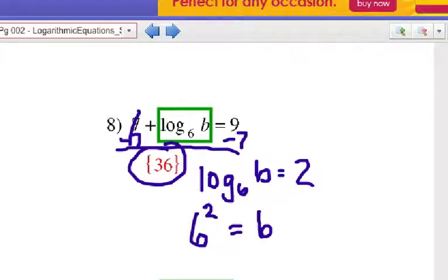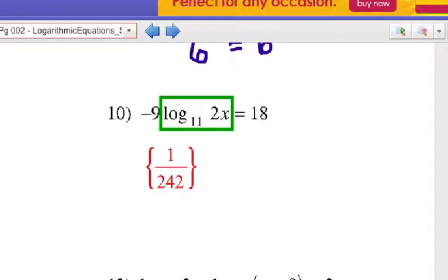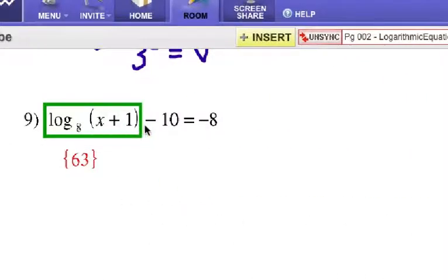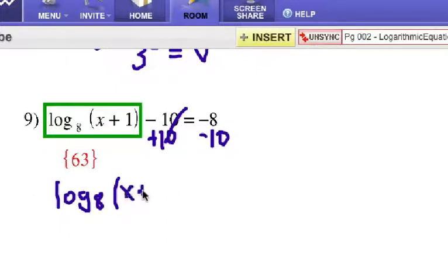Yeah, let's keep going here and let's see how you're doing. Number nine, this log expression here, minus ten, equals negative eight. Well, let's add ten to each side. Alright, so log base eight of that expression, x plus one, equals negative two.